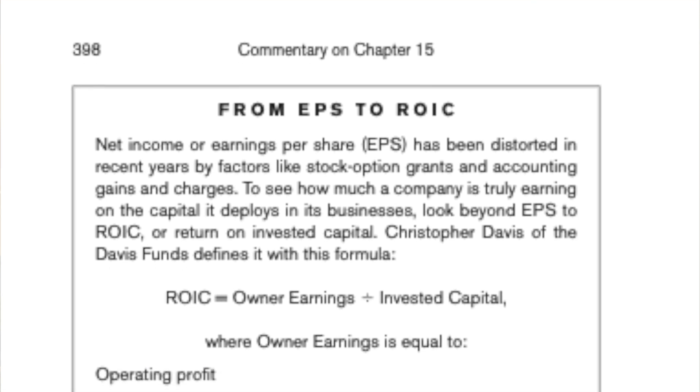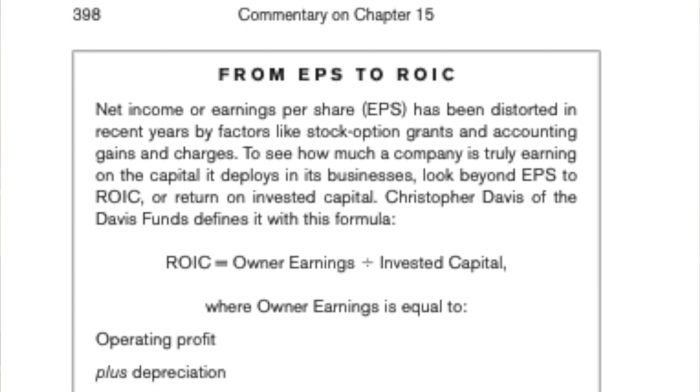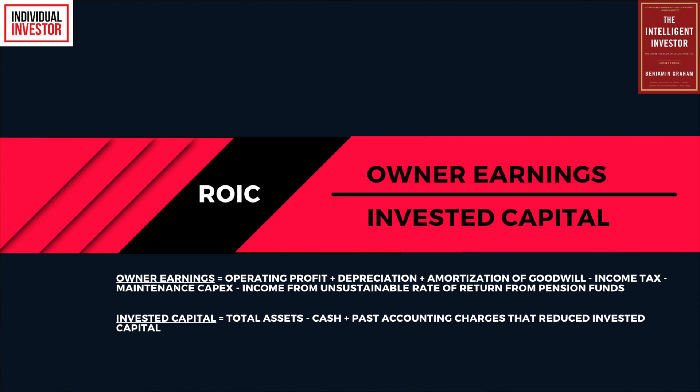If you read the Intelligent Investor book on chapter 15, they provide a definition for ROIC according to Christopher Davis from the Davis Funds. He defines return on invested capital as owner earnings divided by invested capital. Breaking it down: owner earnings equals operating profit plus depreciation plus amortization of goodwill minus income tax minus maintenance capex and minus income from unsustainable rate of return from pension funds. The invested capital equals total assets minus cash plus past accounting charges that reduced invested capital. As you can see, that definition is not very straightforward.